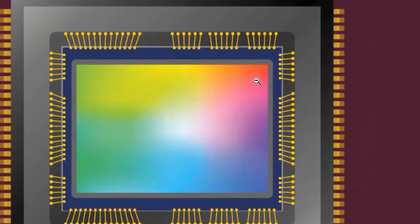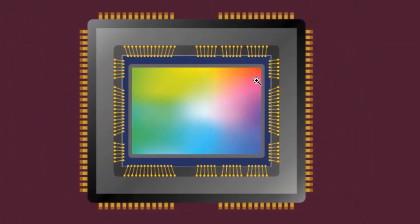To rephrase: the image sensor senses light and colors, absorbs them to convert them into an electronic signal, and then processes them into an image. ISO works in conjunction with the image sensor, which we will discuss when we start the exposure triangle. Good luck and have fun!